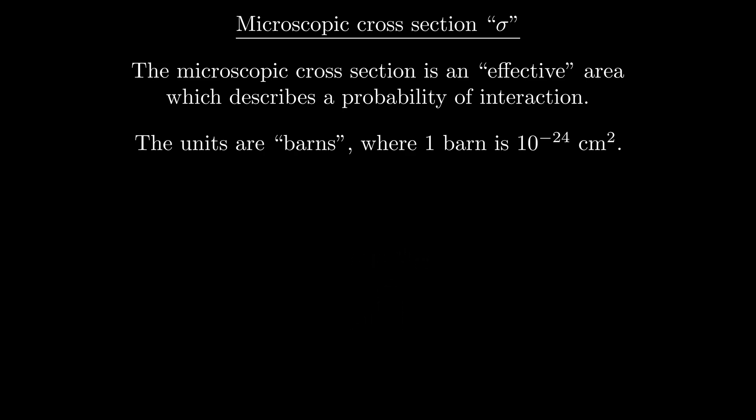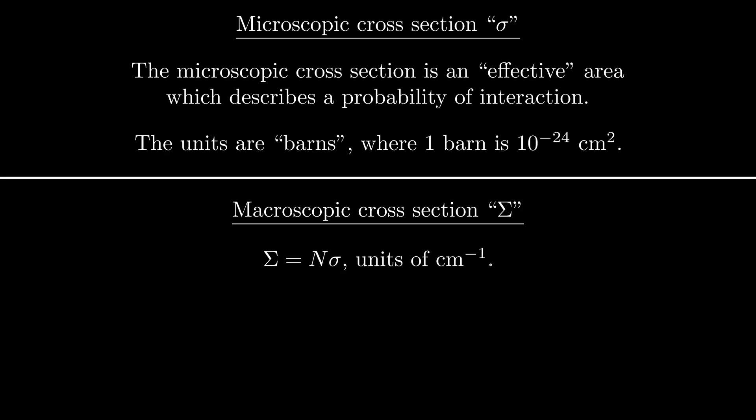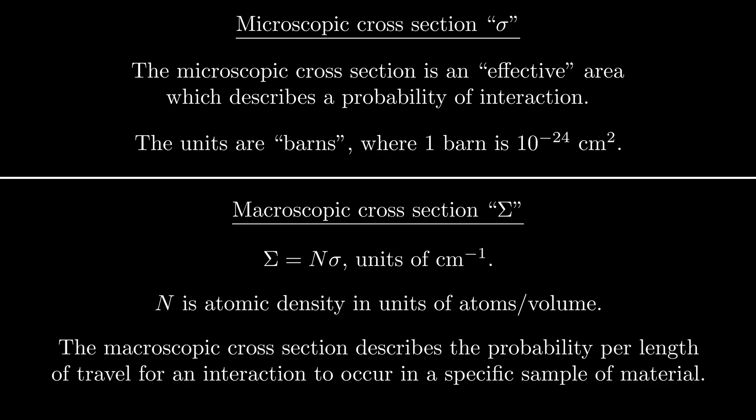When we multiply the material's atom density by its microscopic cross-section, we get a quantity called the macroscopic cross-section which we represent with big sigma. This has units of inverse length, and it's equal to the probability of interaction per unit length of material. If you take the macroscopic cross-section of a slab, and multiply it by the slab's thickness, you get the probability of an interaction taking place in the slab for a given particle. While the microscopic cross-section is a property associated with the material itself, the macroscopic cross-section is also dependent on the material's density. And if you divide one by the macroscopic cross-section, you get the average distance a particle will need to travel in a material before we would expect an interaction to occur. This is called the mean-free path.